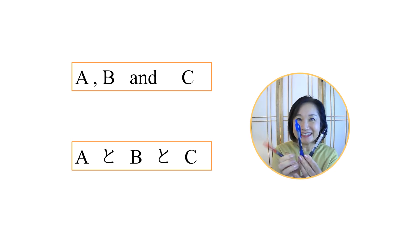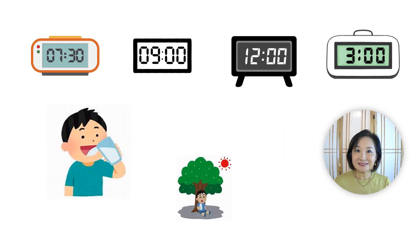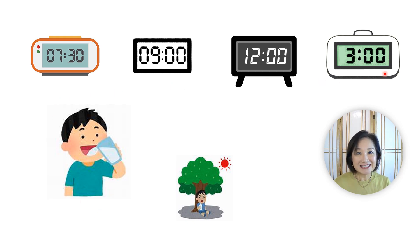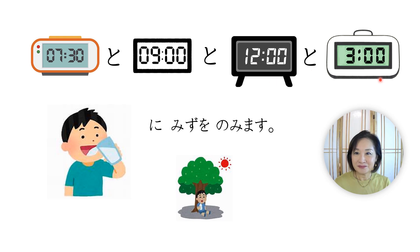How do you say 'there are red pen and blue pen and black pen' in Japanese? 赤いペンと、青いペンと、黒いペンがあります。 Let's make some more sentences. Ken drinks water four times a day. ケンさんは、七時半と、九時と、十二時と、三時に水を飲みます。